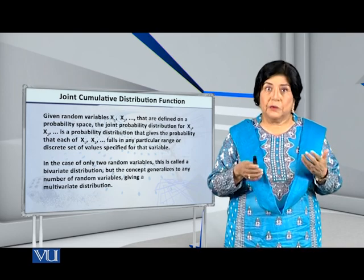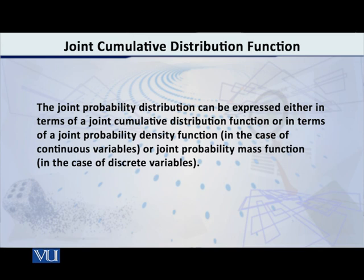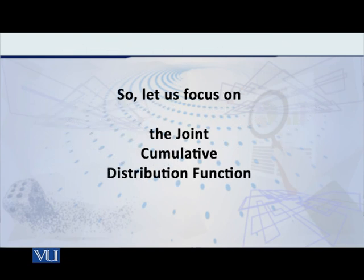The joint distribution can be expressed either in terms of a joint cumulative distribution function, which can also be called a joint CDF, or it can be expressed in terms of a joint probability density function — of course, if the variables are continuous — or a joint probability mass function if the variables are discrete. So, students, let us focus on the joint cumulative distribution function.